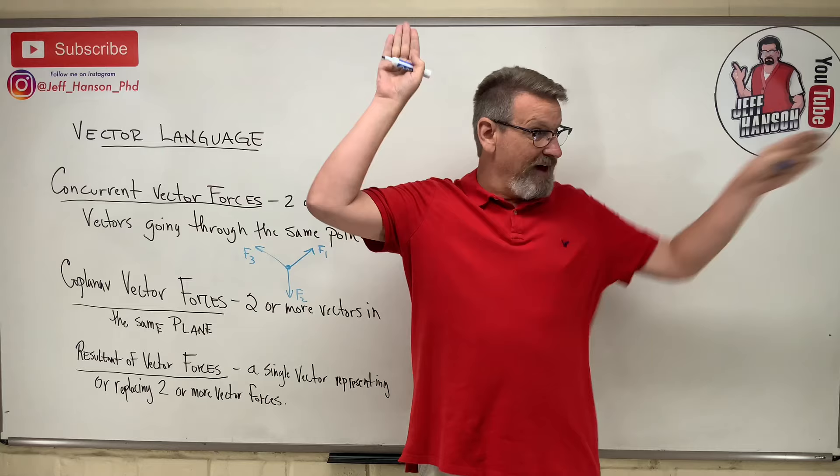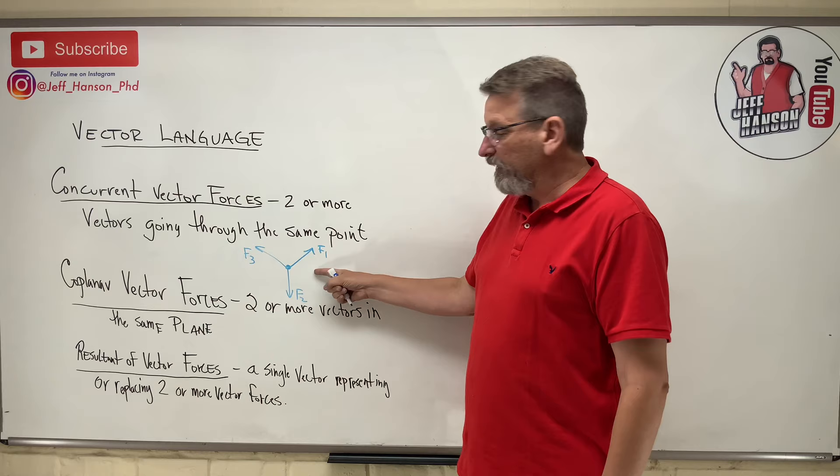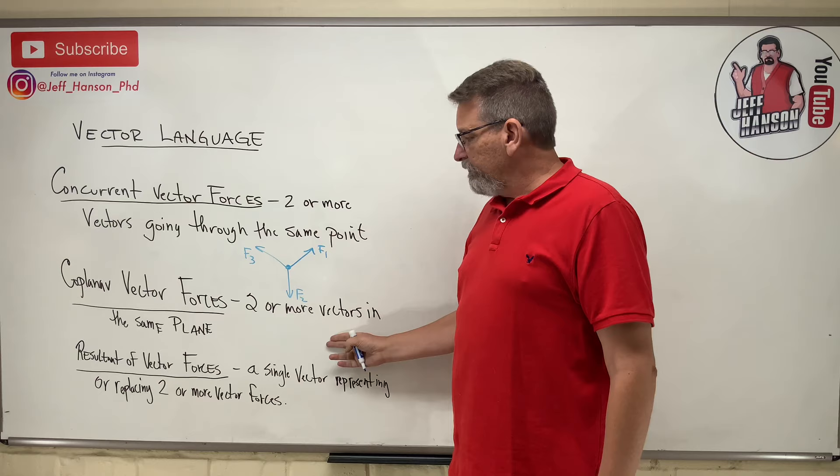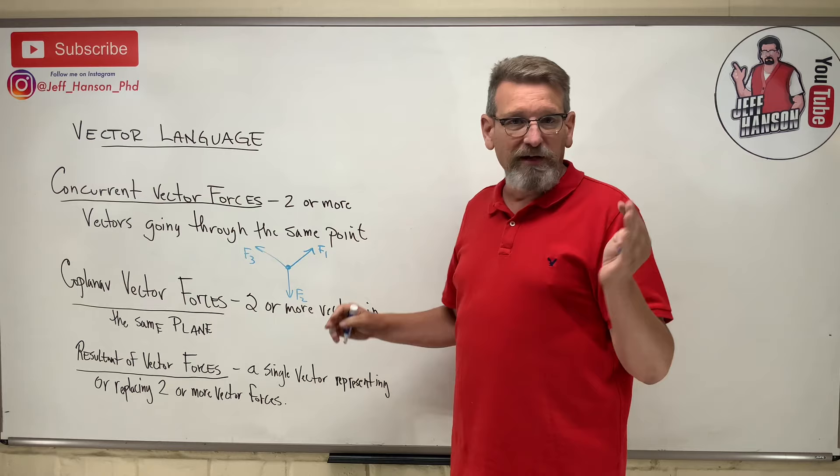Well, no, because then you can have one this way, one that way, and then one that way. There's no way you can contain that in the same plane. Now these three vectors are in the same plane, right? They're in the plane of the board. But when you get two vectors, if they're concurrent, they're always in the same plane. But if you get three, maybe, maybe not.